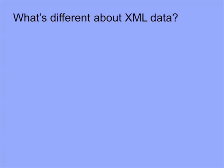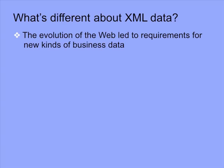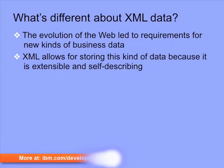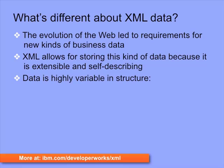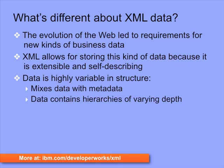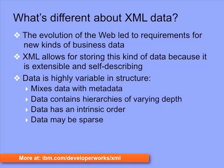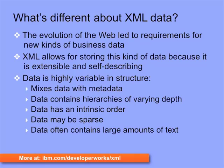But what is different about XML data? The evolution of the web led to requirements for new kinds of business data, for example, medical records or insurance records. XML is a natural choice since it allows for storing this kind of data because it is extensible and self-describing. But XML data is also highly variable in structure. It mixes data with metadata. Data can contain hierarchies of varying depth. Data has an intrinsic order, it may also be sparse, and it can often contain large amounts of text.